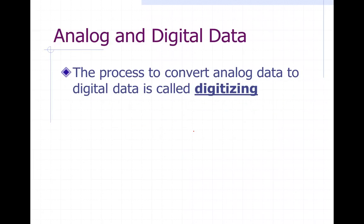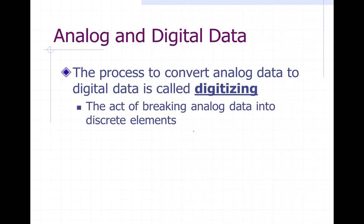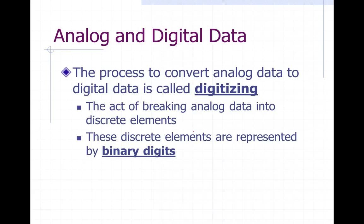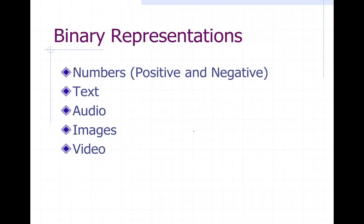The process to convert analog data to digital data is called digitizing. So if I want to take an analog signal and convert it to a digital signal, I must digitize it. By definition, you can define it as the act of breaking analog data into discrete elements. These discrete elements are represented by binary digits.